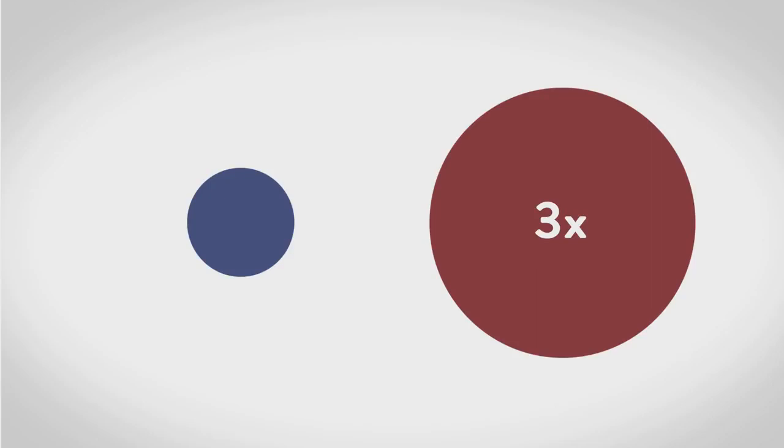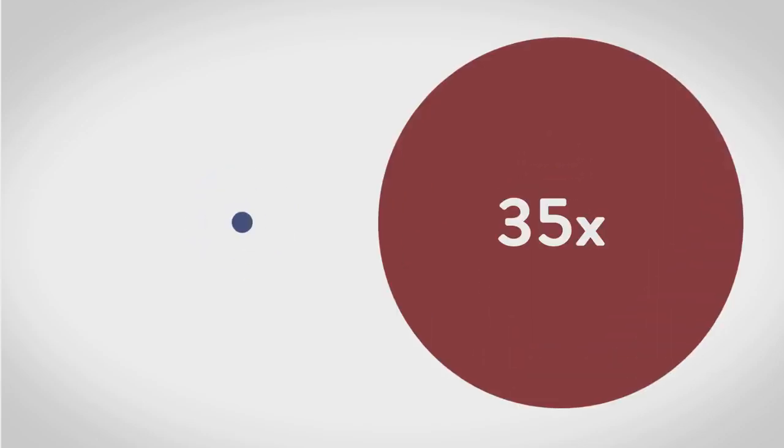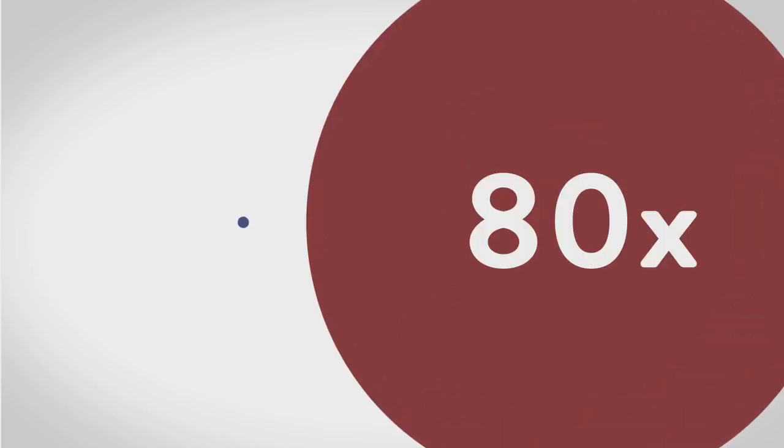200 years ago, rich countries were only 3 times richer than poor countries. By the end of colonialism in the 1960s, they were 35 times richer. Today, they're about 80 times richer.